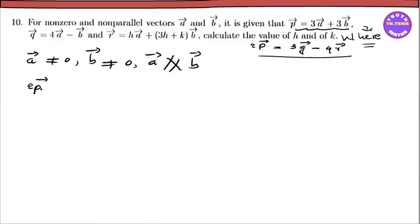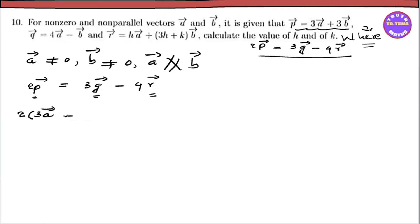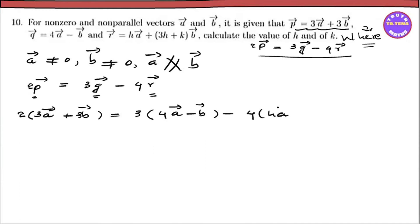2P vector equals 3Q vector minus 4R vector. That is equation 1. So this 2P vector is equal to 3A vector, 3B vector plus 3B vector — 3Q vector — then 4A vector minus B vector, minus 4A vector, giving 3A vector plus 3H plus K times B vector.